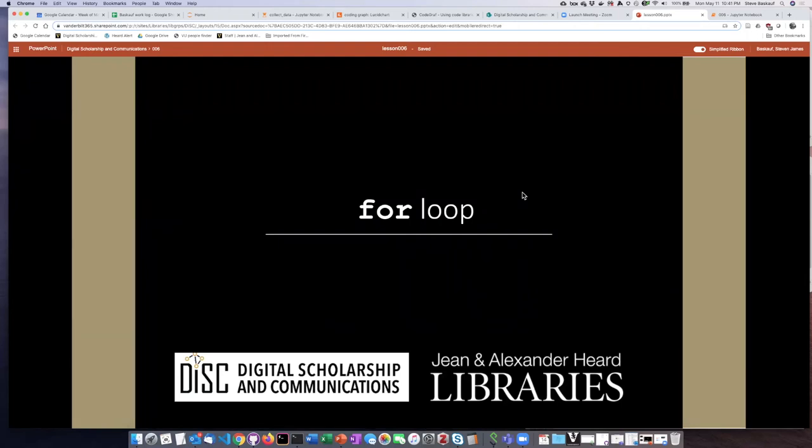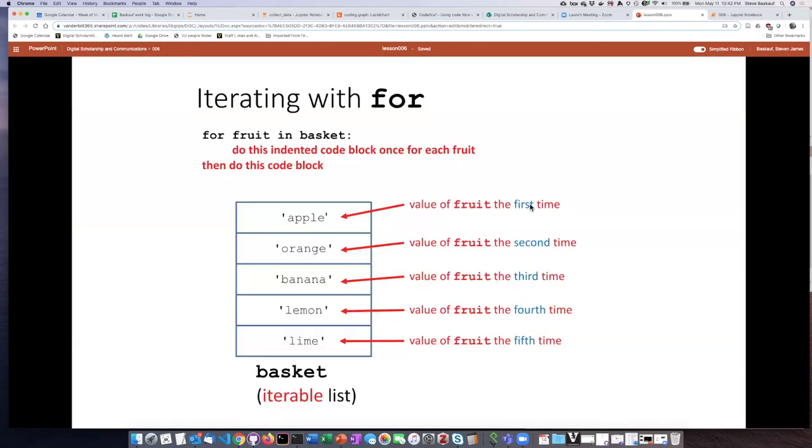So we've seen how to create lists, how to manipulate lists, and how to edit lists. The last topic that we are going to talk about is how you can step through lists or any other kind of iterable object and do something to each item one at a time. This is called a for loop.